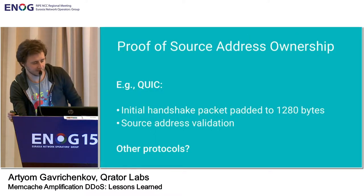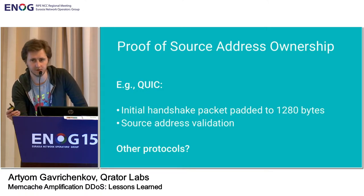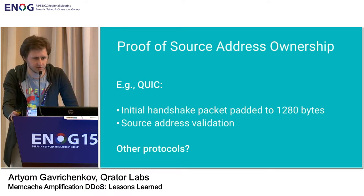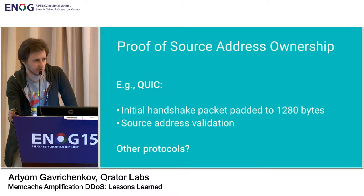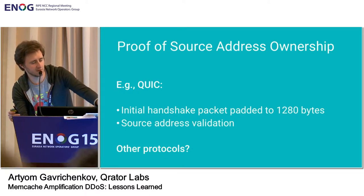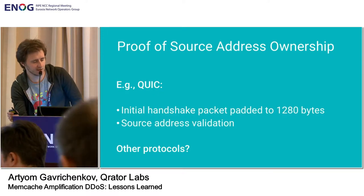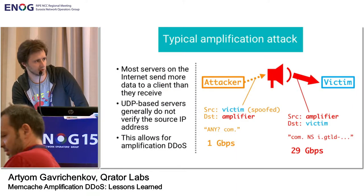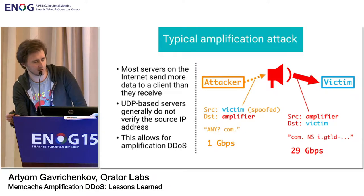For example, take the QUIC protocol being developed by the IETF. During its design, the first initial handshake packet is padded with zeros or trash up to 1.5 kilobytes. During the handshake, QUIC validates the source IP address. Other UDP protocols didn't do this, so an attacker can tell the server that he speaks on behalf of the victim, sending a small query, and many packets of several kilobytes will go back against the victim.